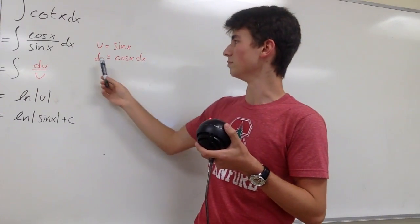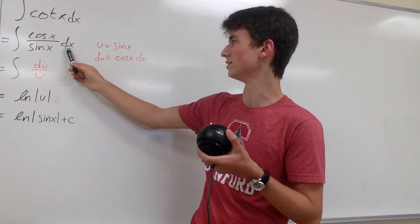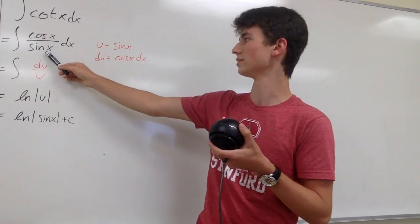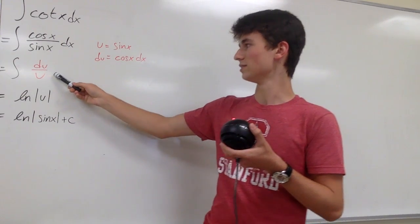We can plug this back in because right here we have the cosine x dx, which is du, and sine of x is u. So we end up with du over u.